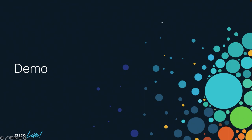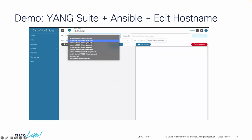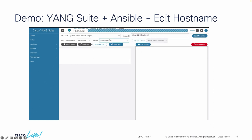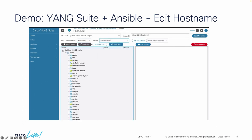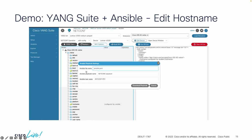Let's move into a demo. We're actually going to use Ansible to do something simple — edit our hostname. In Yang Suite, we load up our Yang set and identify the Yang model we want to use, which is our interfaces. We load this, select that we want to make a change to our device, select the device we would like to use, find our hostname, and change it to whatever name we'd like. Then we can build up the payload and send it directly to our device, or download the Ansible playbook and generate it on the fly.